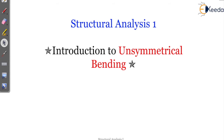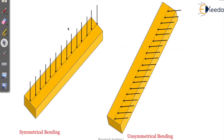A beam is a structural member. If we consider this as a beam, it takes a transverse load. If this is the beam alignment, it takes a transverse load. Such a particular action of the loads will create symmetrical bending. If you cut a cross section and study it, the beam acts in line with the axis.